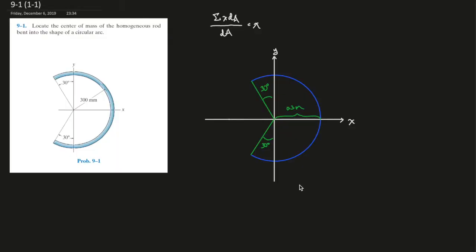I can assist you or tutor you more if you have more questions, just email me. Chapter nine here, centroid, right, center of mass. It says locate the center of mass of the homogeneous rod bent into the shape of a circular arc.